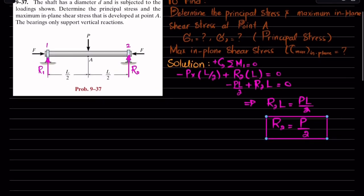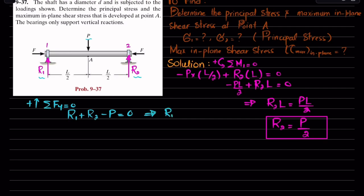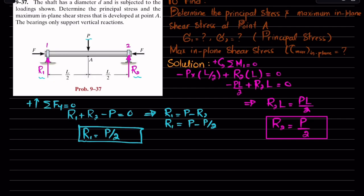Now we find R1 using the equation: sum of all forces along the Y direction must equal 0, with upward force taken as positive. R1 is upward, R2 is upward, and P is downward. So: R1 plus R2 minus P equals 0. Therefore R1 equals P minus R2, which is P minus P/2. So R1 is also equal to P divided by 2.